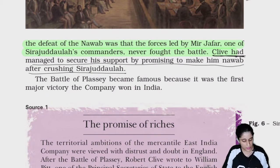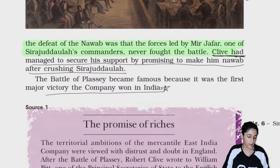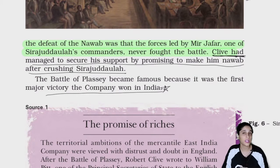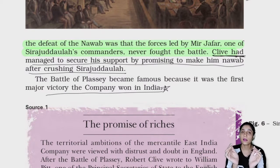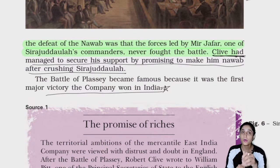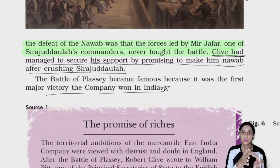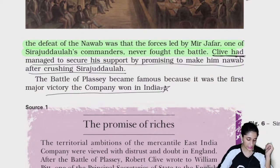The Battle of Plassey became famous because it was the first major victory the company won in India. Company pehle bhi takatwar thi, lekin is battle ke baad sab ko pata chal gaya ki company ki taakat kya hai. Bengal jo tha woh pure Bharat ka, pure Delhi Sultanat ka, takriban ek-chauthai tax akela collect kar leta tha — itna ameer tha Bengal. Aur Bengal ko hara diya Robert Clive ne. So Robert Clive ki importance bahut zyada badh gayi aur British East India Company ki image bahut hi zyaada powerful ho gayi is battle ke baad.